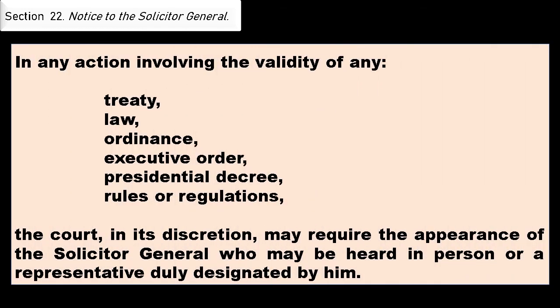Section 22 is notice to the Solicitor General. Not all cases filed against the state require notification to the Office of the Solicitor General — only actions involving the validity of any treaty, law, ordinance, executive order, presidential decree, rules or regulations. In such cases, the court in its discretion may require the appearance of the Solicitor General, who may be heard in person or through a representative duly designated by him. That concludes Rule 3 of the Rules of Court.